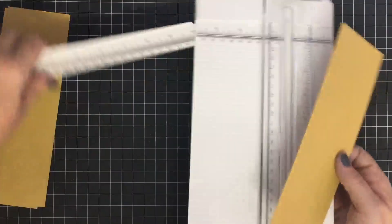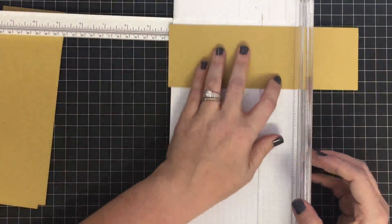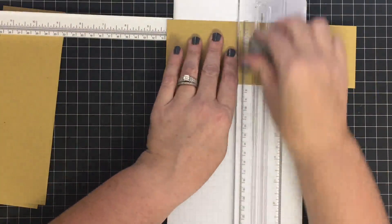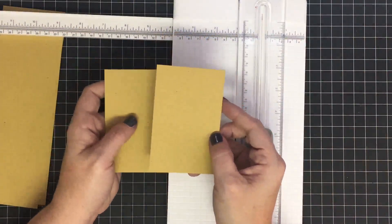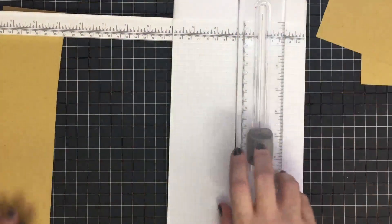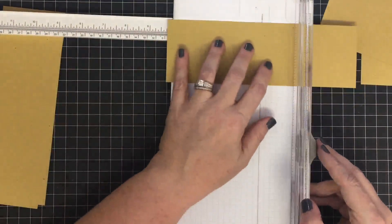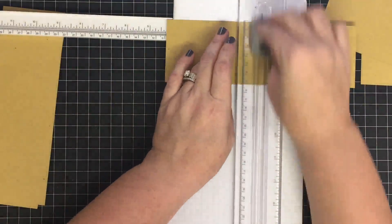Now we're going to cut them in half at 4.25. I'll open the arm of my trimmer and cut them in half at 4.25. You can cut the page in half at 4.25 first if you'd rather. This way just works for me. We're going to end up getting eight tags out of this page.